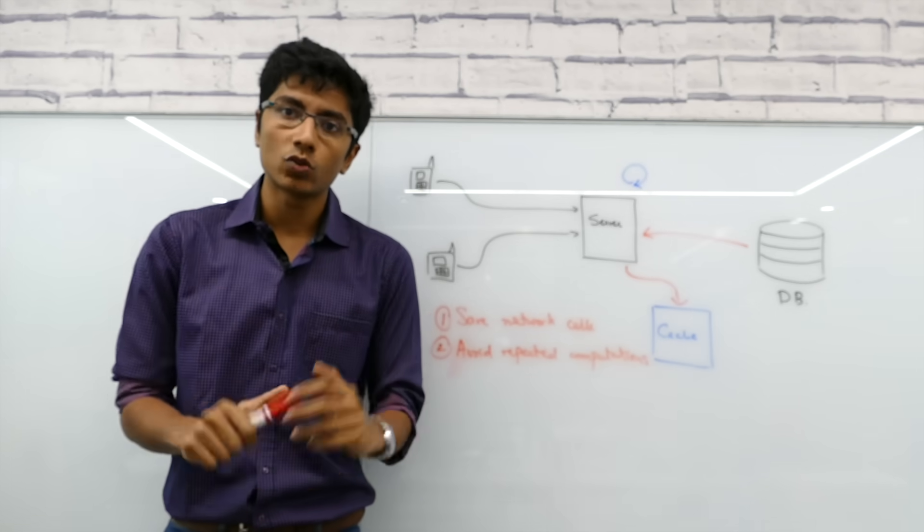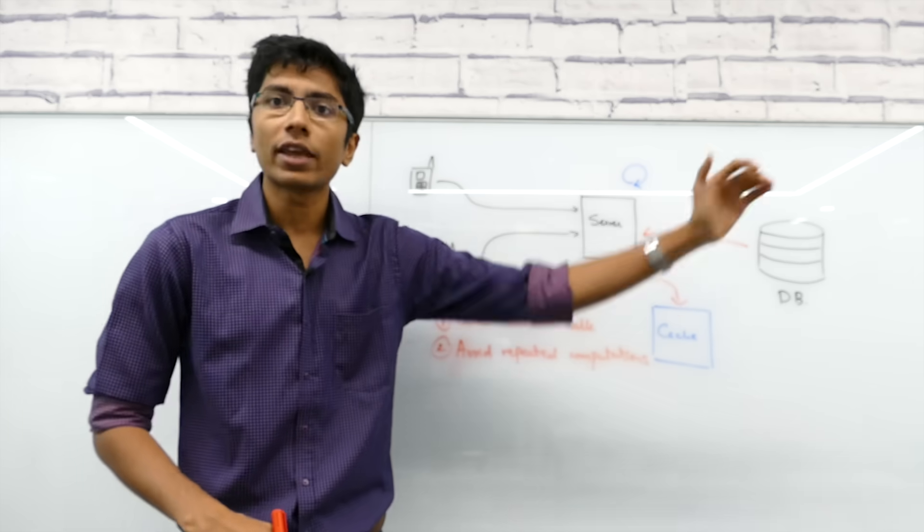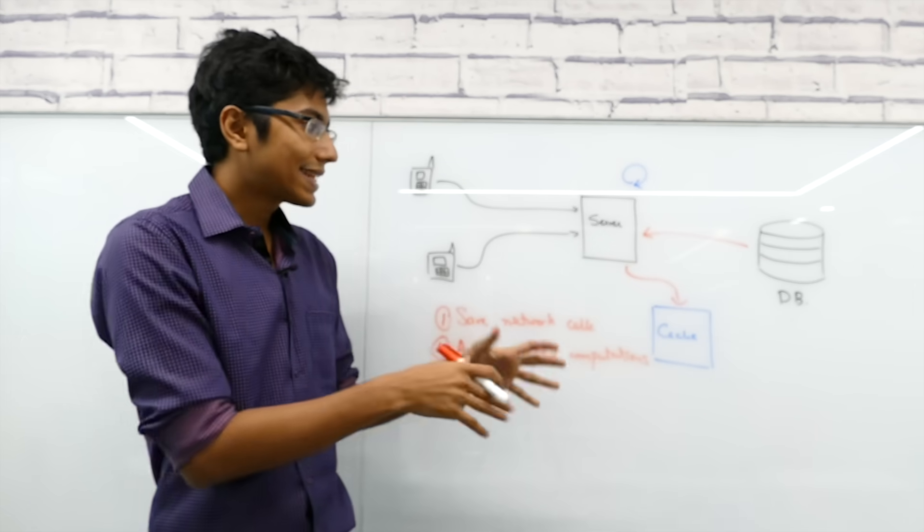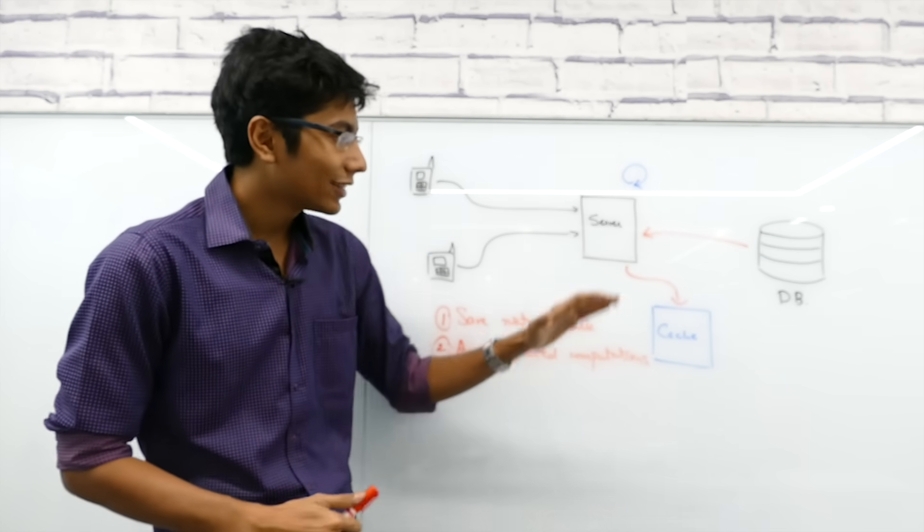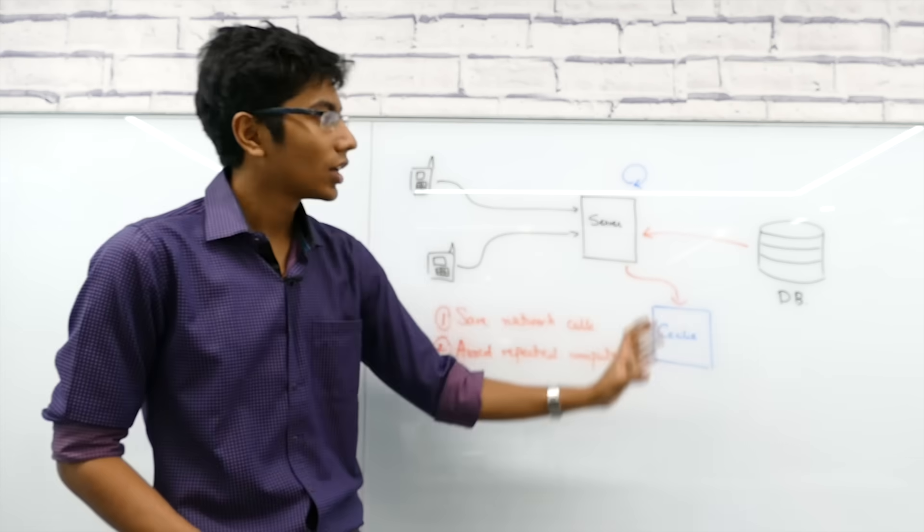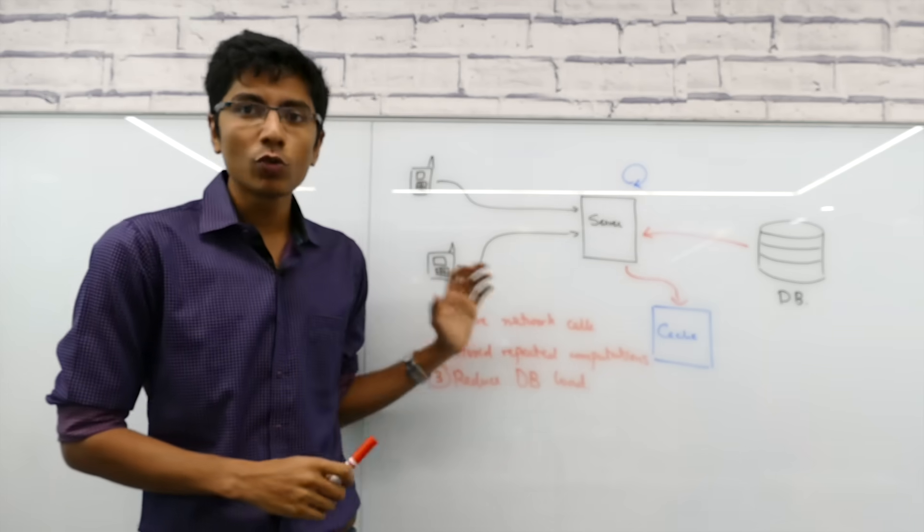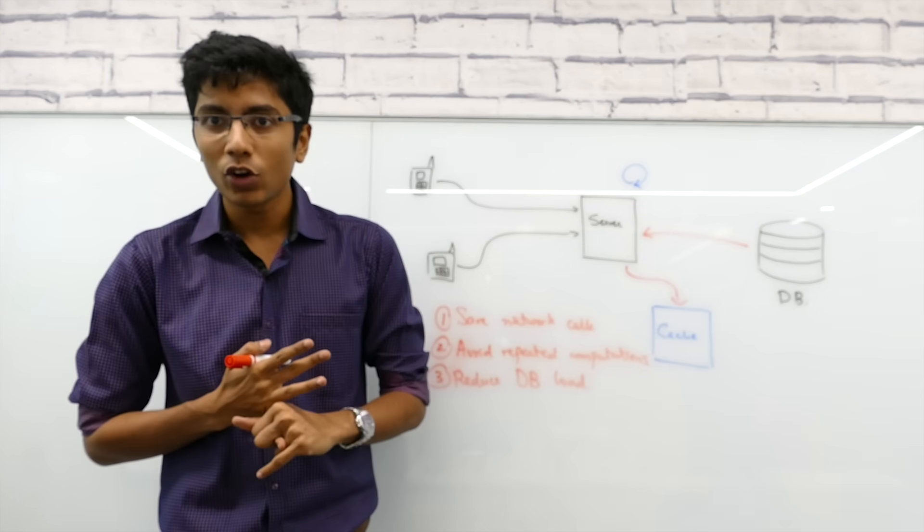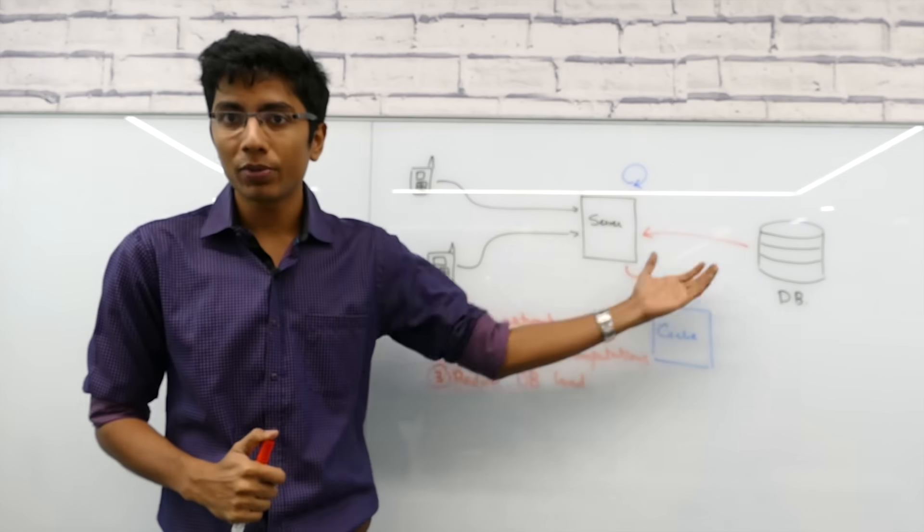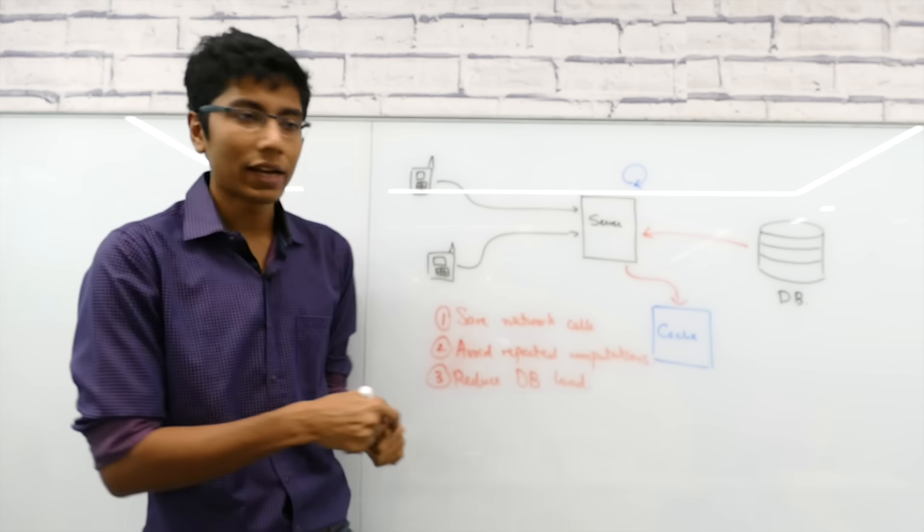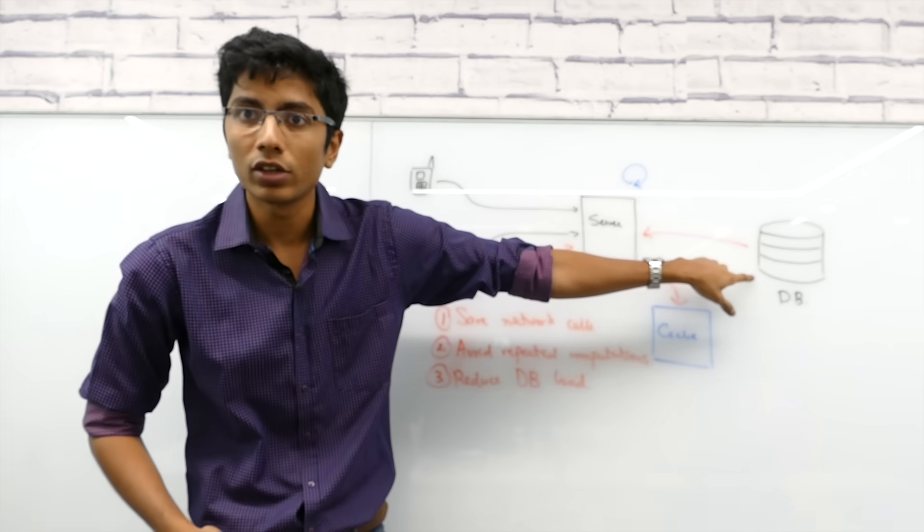The final scenario where you want to be using a cache is when you want to avoid load on the database. So if you have a lot of servers and they are all hitting the database to get information, it's going to be putting a lot of load. Instead you can get some caches, maybe two or three, a distributed system you know after all, and then you can keep that information in the cache, you can hit the caches, avoid hitting the database. But the first two points are the key ideas of a cache which is either avoiding a network call or avoiding computations. And both of them are designed to help you speed up responses to your clients. So a client makes a call and you immediately give a response if you have it in cache instead of making a query to the database.